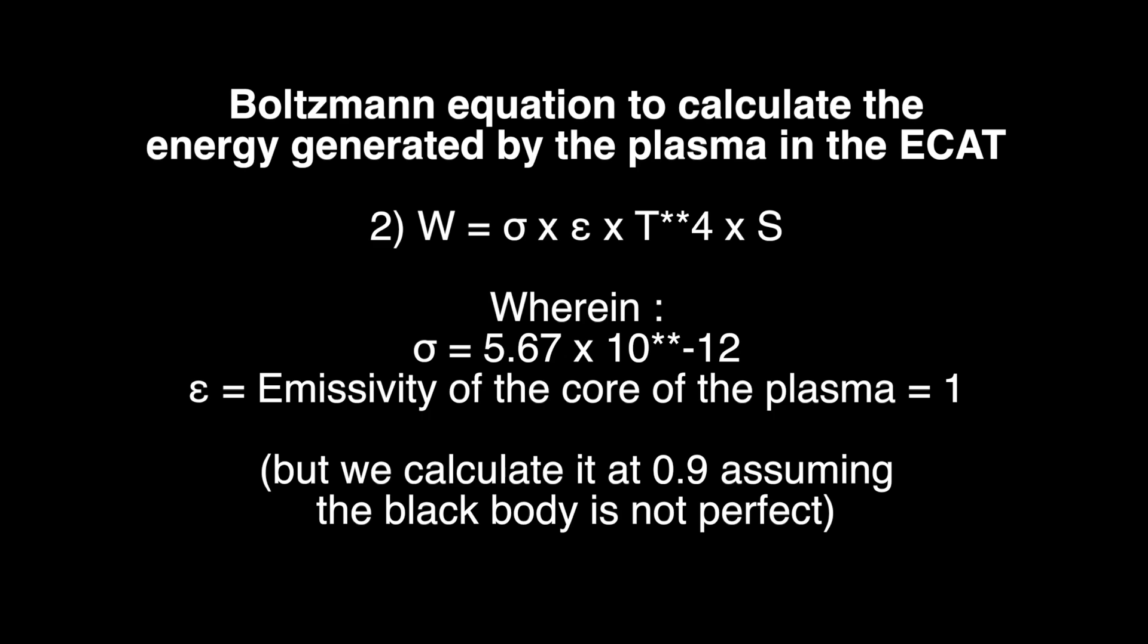Now we use this temperature with the Boltzmann equation to calculate the power of the ECAT. We can see Watts equals sigma times epsilon times T to the fourth power times S.